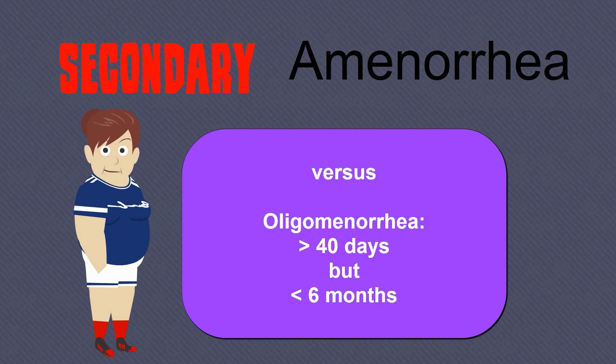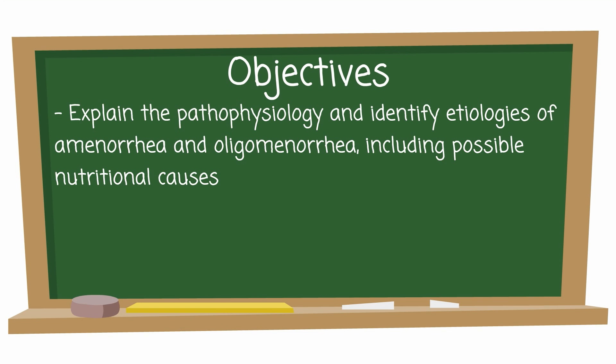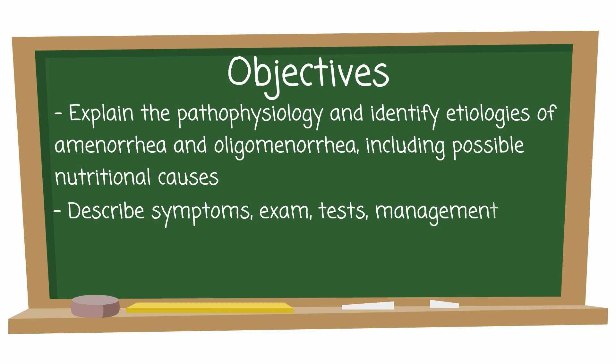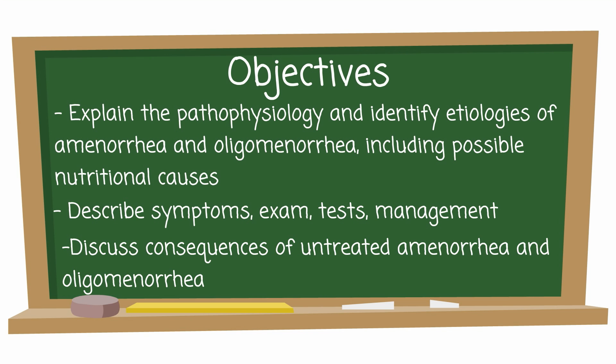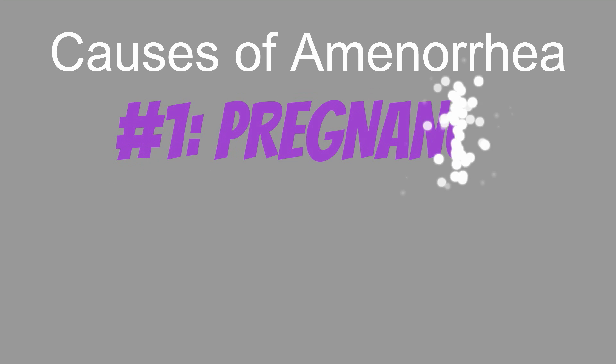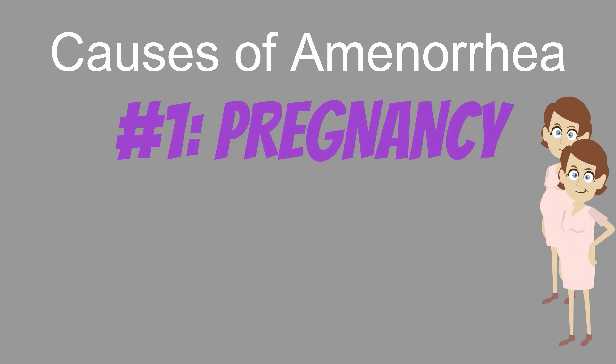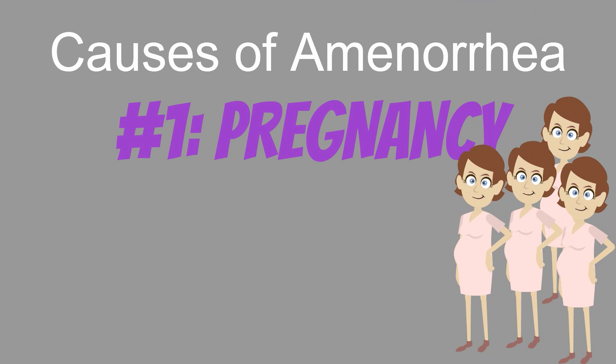Oligomenorrhea involves bleeding-free days greater than 40 but less than six months. The objectives of this video are to explain the pathophysiology and identify etiologies of amenorrhea and oligomenorrhea, including possible nutritional causes; describe associated symptoms, examination findings, diagnostic tests, and management; and discuss the consequences of untreated amenorrhea and oligomenorrhea. The most common cause of amenorrhea is pregnancy, and this should always be ruled out prior to further evaluation.